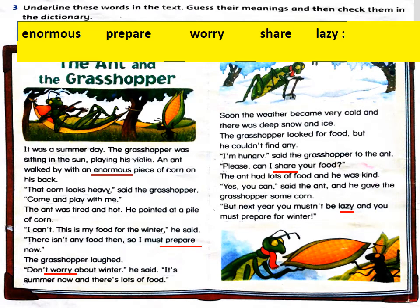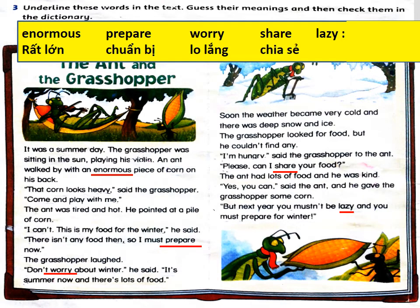Now we can guess their meanings and check them in the dictionary. Enormous means something is very, very big. Prepare means you get ready to do something. Worry means to think something bad might happen. Share means something divided between several people. Lazy means you don't want to work. Now let's move on to the next slide to read again and complete the sentences.